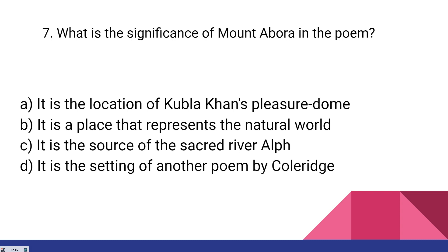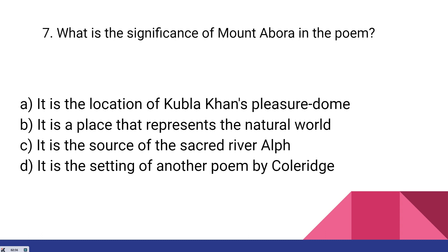What is the significance of Mount Abora in the poem? The answer is option B — it is a place that represents the natural world. It is in Ethiopia, a real place. What literary device is most prominent in Kubla Khan? It's option C — imagery.